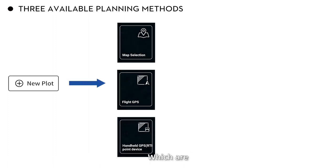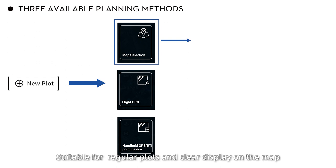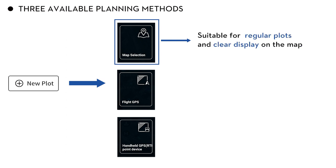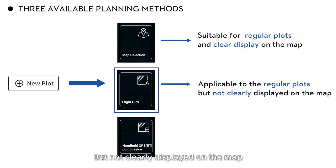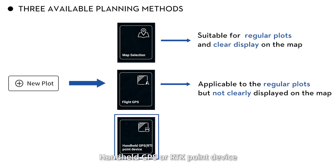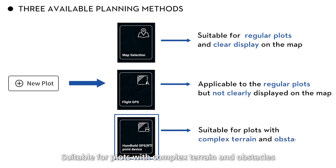There are three available planning methods: Map section, suitable for regular plots with a clear display on the map; Flight GPS, applicable to regular plots not clearly displayed on the map; and Handheld GPS or RTK point device, suitable for plots with complete terrain and outstakes.